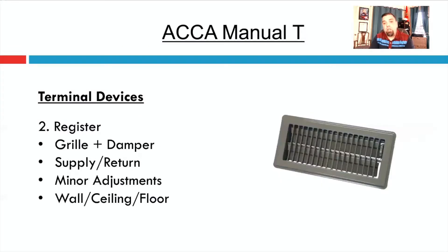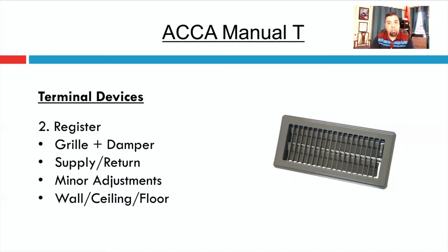A register is basically a grill plus a damper. That's the classic 421 from Hart and Cooley pictured there — grill plus a damper — it gives you the ability for minor adjustments. These could be located on the supply or the return. Most people don't use registers on the return because they don't want people shutting them off, but if you want to make minor adjustments to balancing return ducts you could. Keep in mind the more you close that damper, the noisier it gets because velocity goes up to pull the same volume of air. Most people put dampers in ducts for large adjustments; minor adjustments can be done with the damper in a register. You'll typically find registers on walls, ceilings, or floors.